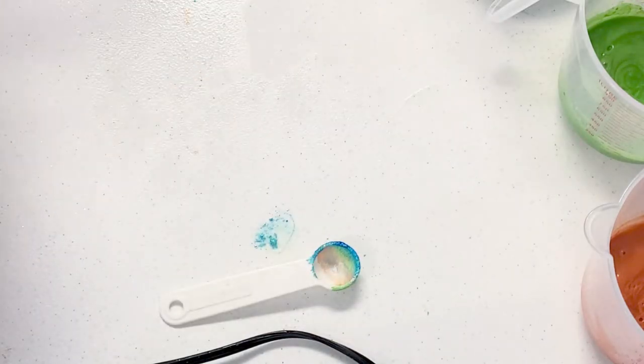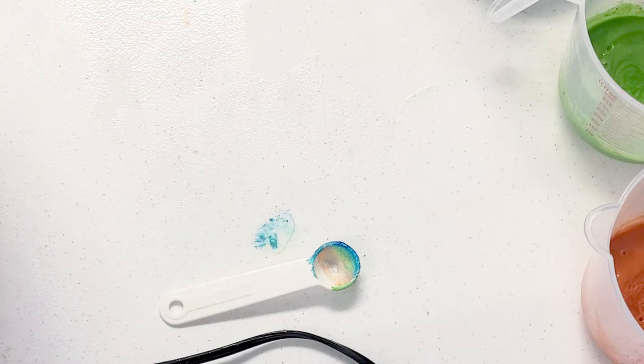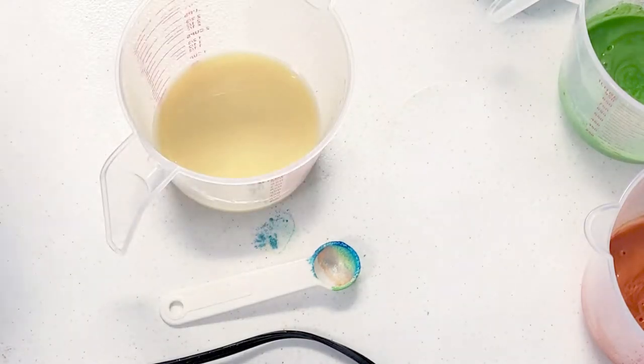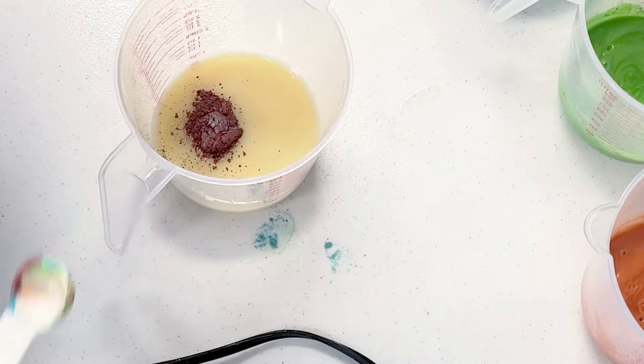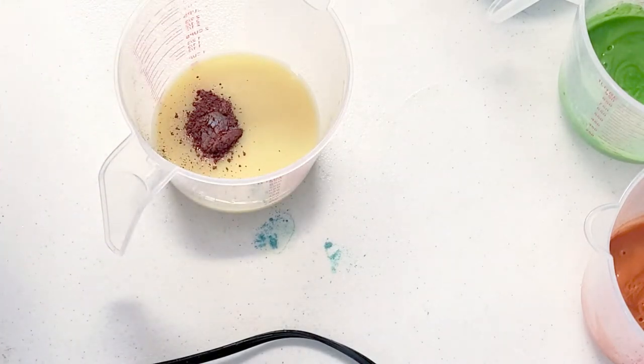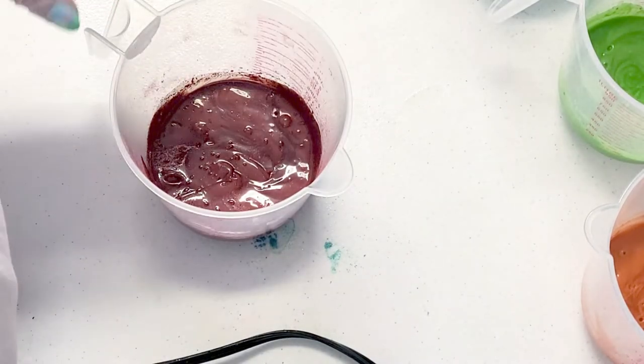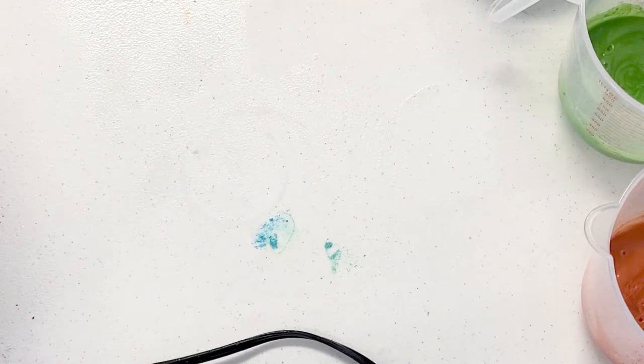So I just realized I pulled out five colors instead of six. Well, that's dumb. So I'm going to do red instead of purple. This is Red Vibrance from Nurture Soap and Voodoo from Mad Micas. So I have already failed in the rainbow soap because I didn't pull out enough colors. That was dumb.